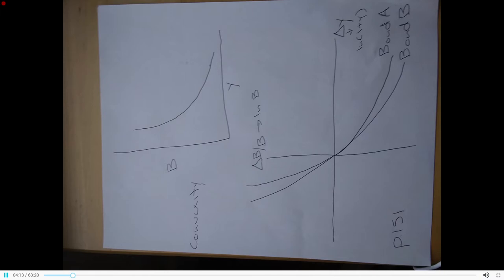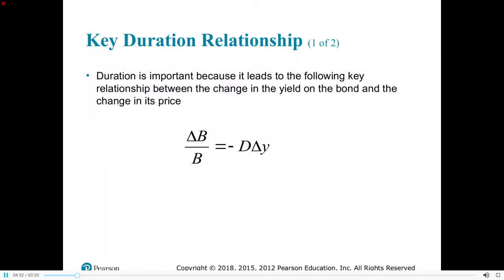To really capture this relationship, this is happening in continuous time and therefore should really be expressed in continuous time, which means you take the log. But technically, to be more accurate, the vertical axis is the log of B and the horizontal axis is the log of one plus Y. That's all in the math and not something you're responsible for. This shows us the duration relationship, which is the slope of that line in figure number two.